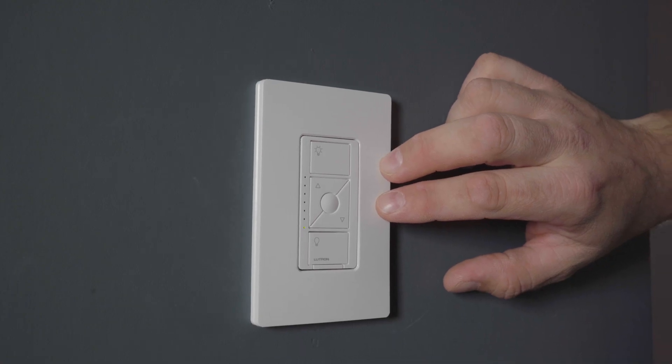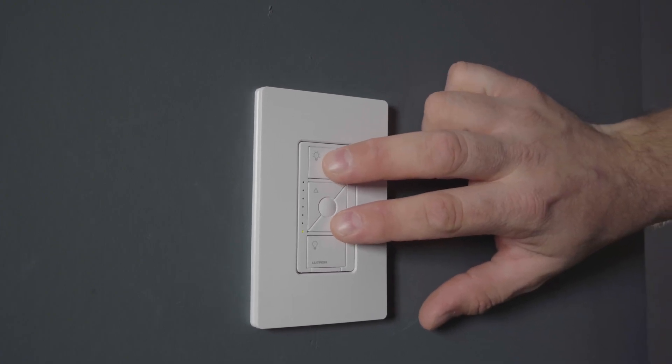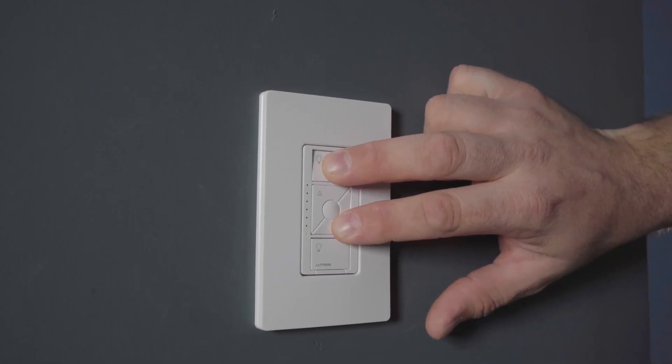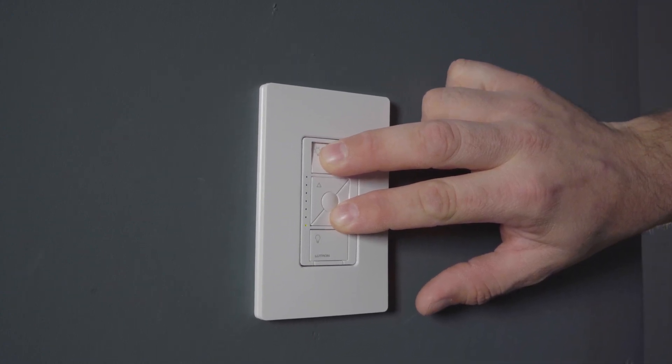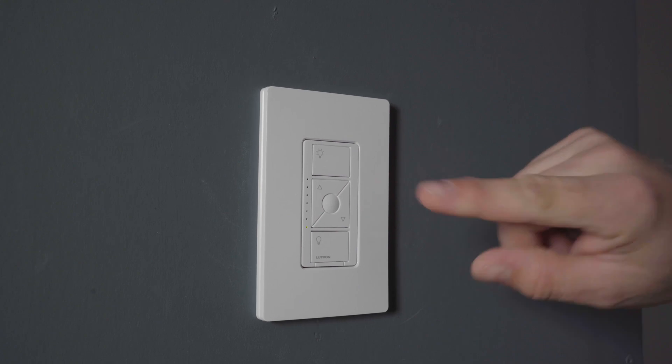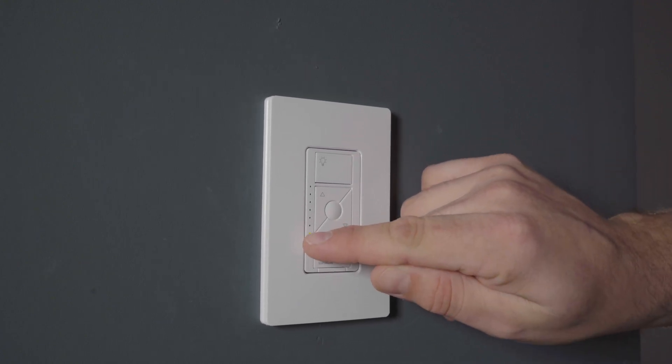You want to hold the darker button and the on button at the same time for six seconds. After you've held them for six seconds, this light will blink.